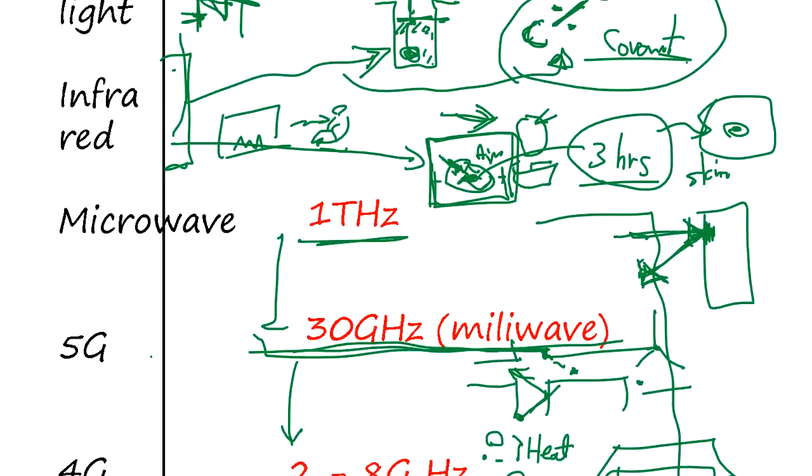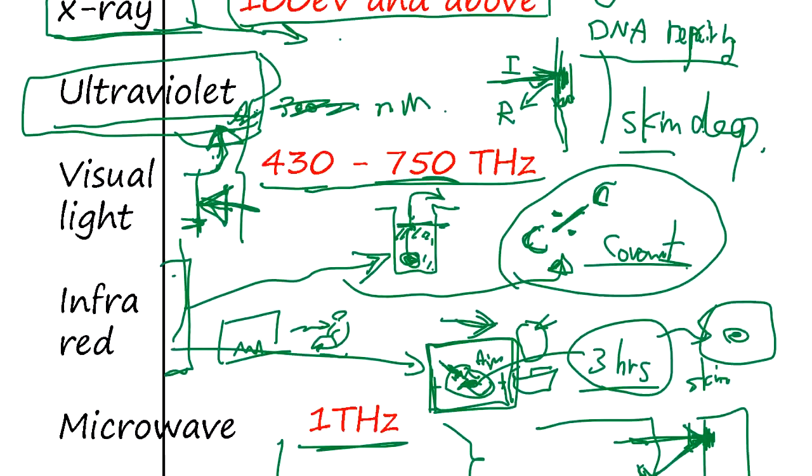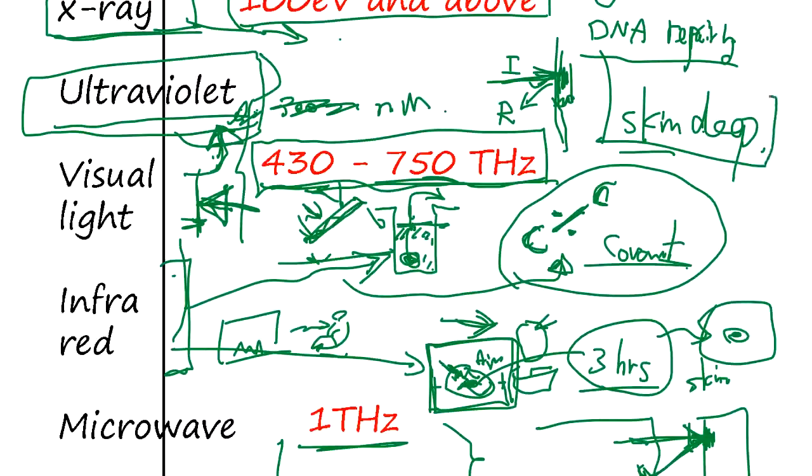When it gets high frequency, like 30 gigahertz and above, those microwaves, it doesn't penetrate the body, and it doesn't have enough energy to change the molecule. The visual light, you know, visual light doesn't penetrate anything, right? If you have like something, an object gets a shadow, because it bounces back and doesn't penetrate anything. So higher frequency doesn't penetrate, and ultraviolet light goes skin deep, and has enough energy to break the covalent bond. That increases the risk of cancer.